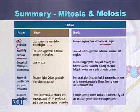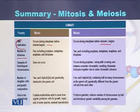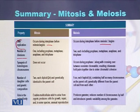If we do the comparison between the divisions, in case of mitosis there is only a single division including prophase, metaphase, anaphase, and telophase. While in case of meiosis it consists of two cell divisions, each one containing prophase, metaphase, anaphase, and telophase.